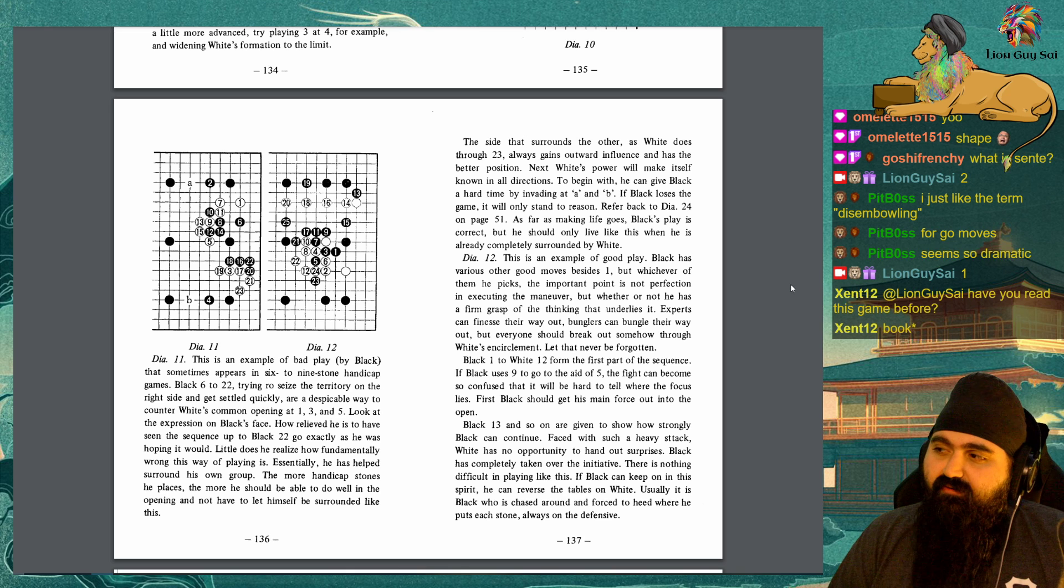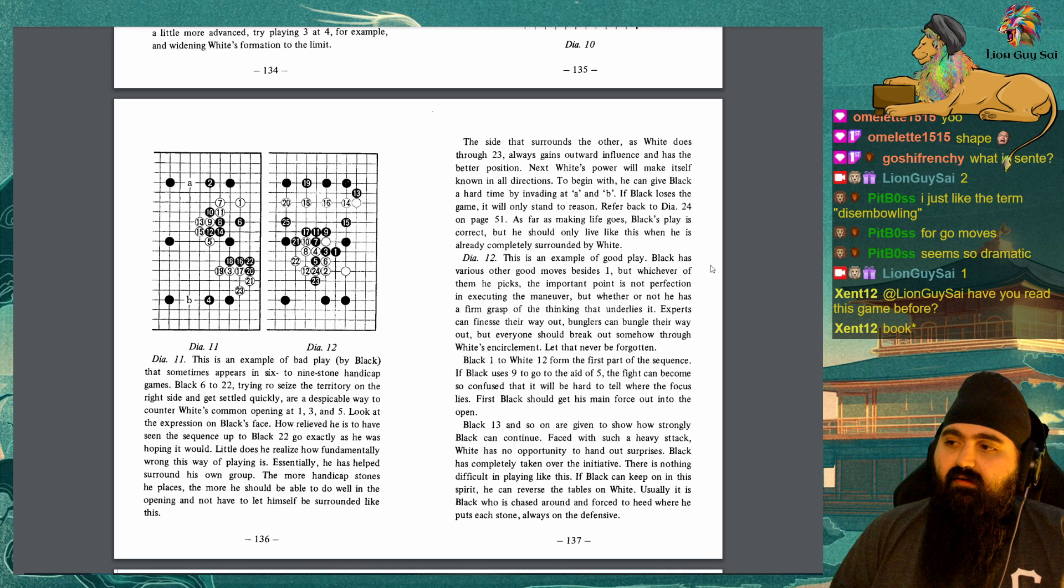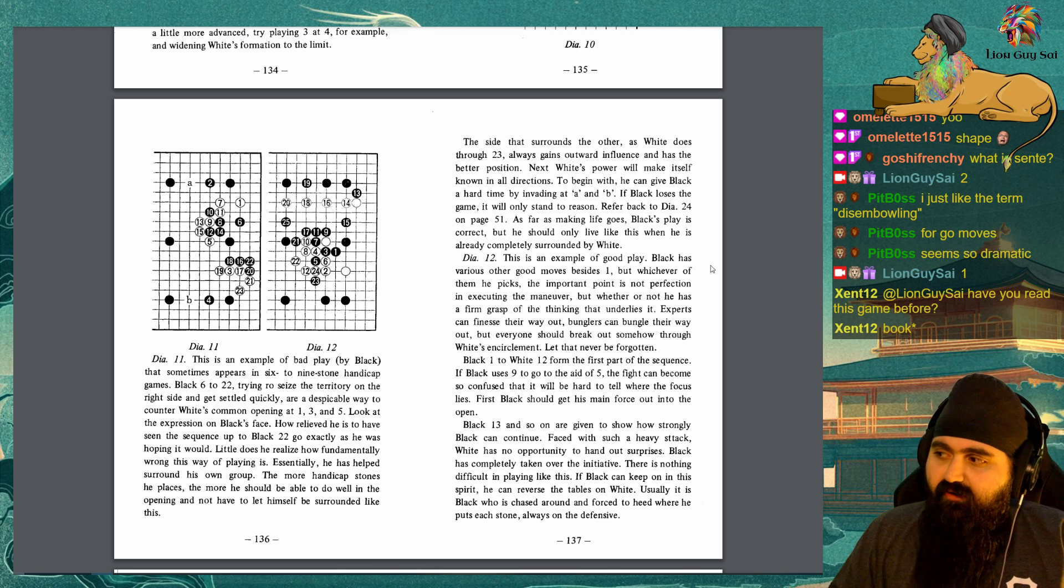The more handicapped stones he places, the more he should be able to do well in the opening and not have to let himself be surrounded like this. The side that surrounds the other, as White does through 23, always gains outward influence and has the better position. Next, White's power will make itself known in all directions. To begin with, he can give Black a hard time by invading at A and B. If Black loses the game, it will only stand to reason. Refer back to Diagram 24 on page 51. As far as making life goes, Black's play is correct, but he should only live like this when he is already completely surrounded by White. Diagram 12: This is an example of good play. Black has various other good moves besides one, but whichever of them he picks, the important part is not perfection in executing the maneuver, but whether or not he has a firm grasp of the thinking that underlines it.